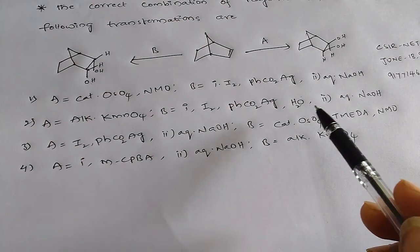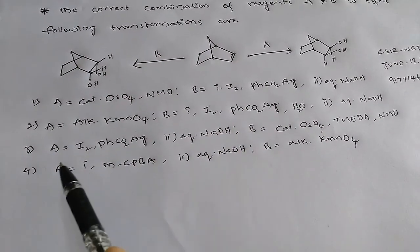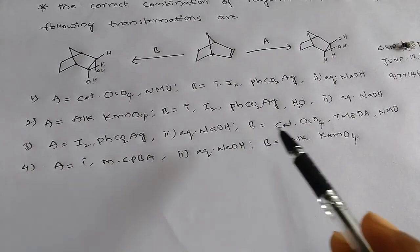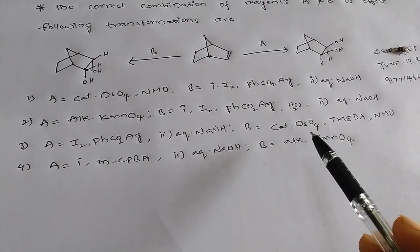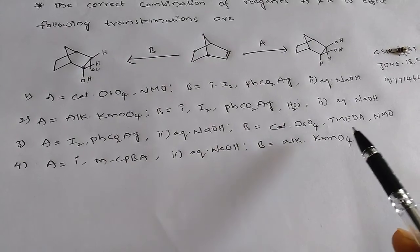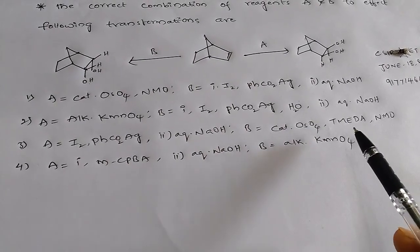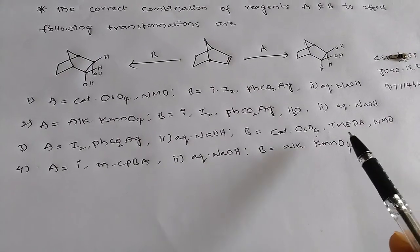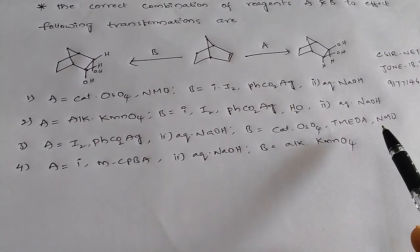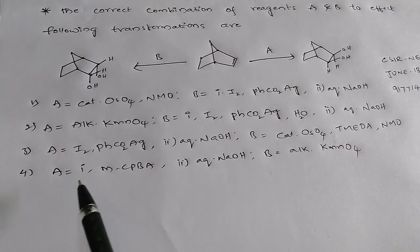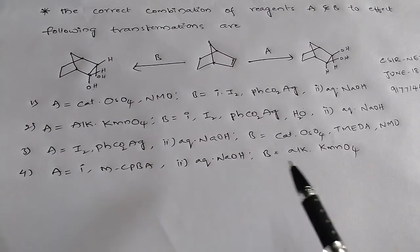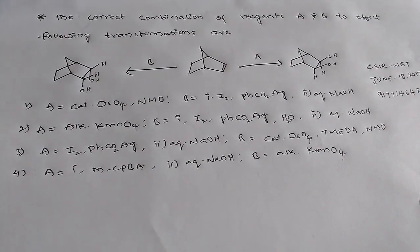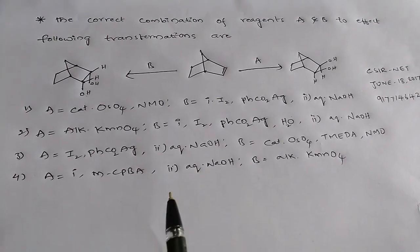Third option: A is iodine and silver ester with aqueous NaOH, and B is catalyst osmium tetroxide and TMEDA (tetramethylethylenediamine) and NMO. Fourth option: A is meta-chloroperoxybenzoic acid with aqueous NaOH, and B is alkaline KMnO4. These are the options given below.